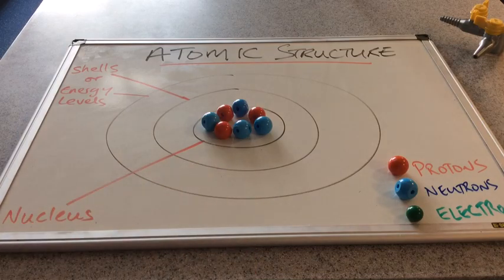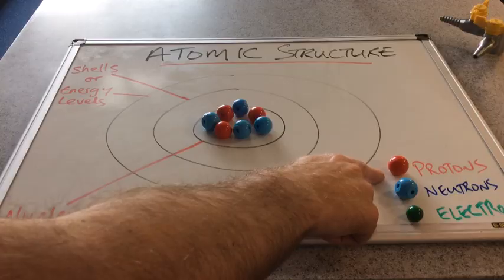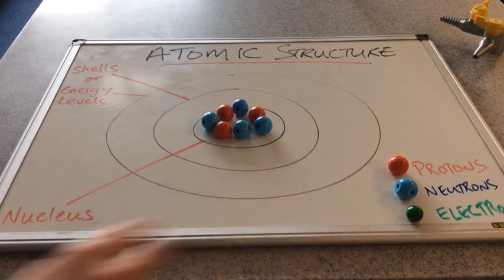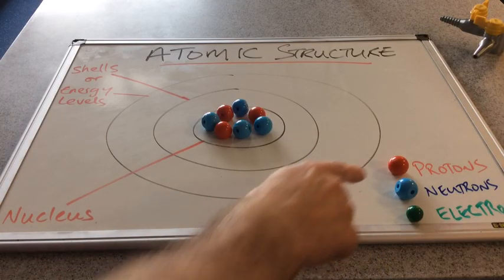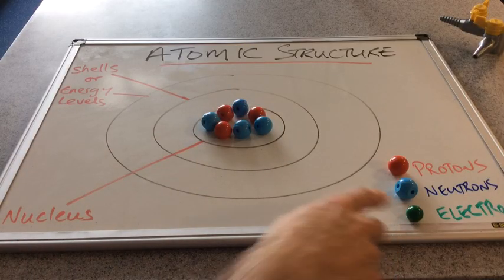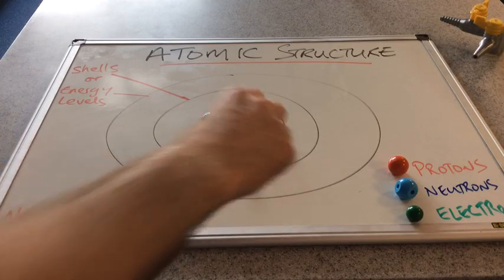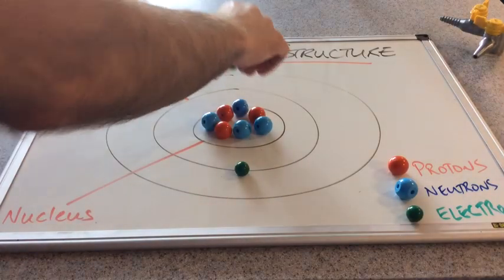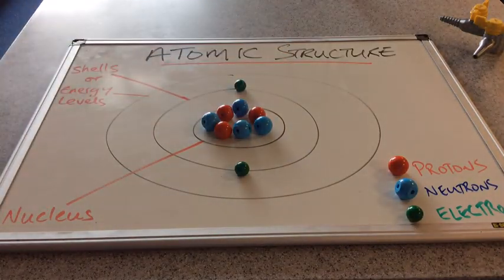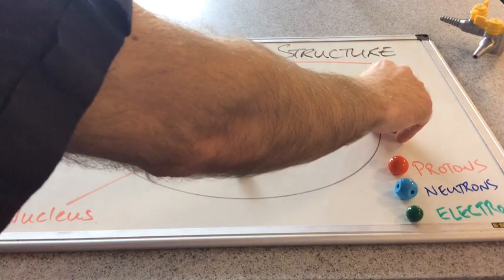An important rule to know about atoms: atoms must have the same number of protons and electrons. We'll explain why in a moment, but because we've got three protons, I must have three electrons. I'm going to put two in the first shell and the third electron in the next shell.